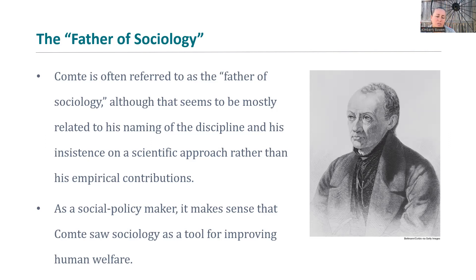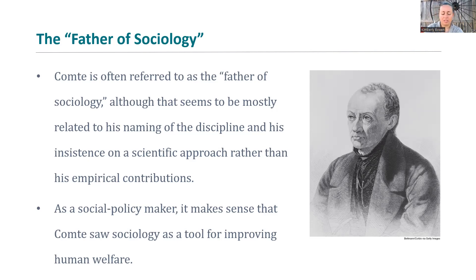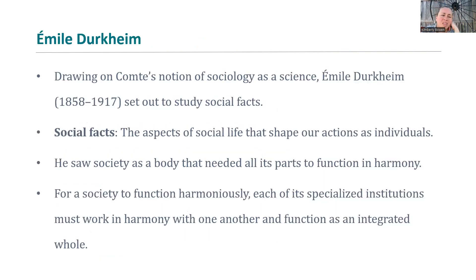Comte was also a social policymaker — he really saw sociology as a tool to research particular strifes happening in society and create better systems to help those experiencing negative outcomes. During the industrial revolution, we're talking about increased income inequality, severe poverty, homelessness, and lack of food. So really, how can we use this research to improve the lives of other people?